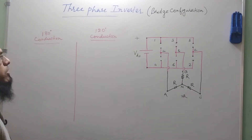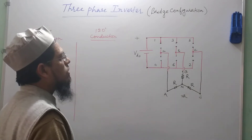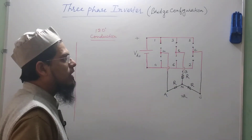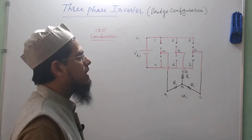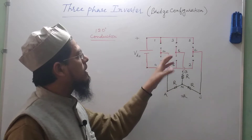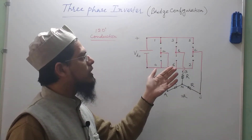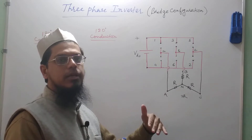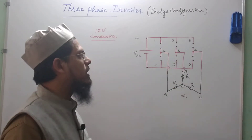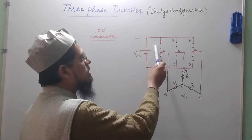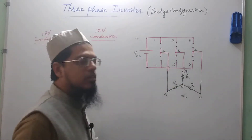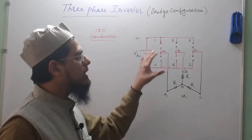A three-phase bridge inverter has been shown here. It has got six switches: 1, 3, 5 and 4, 6, 2. The numbering of the switches is based on the sequence of conduction — the first switch is turned on, then the second, then the third, then fourth, then fifth, and then sixth. That is the logic behind numbering the switches this way.